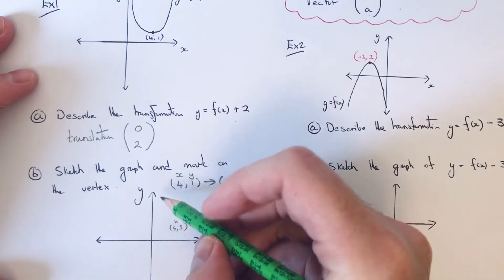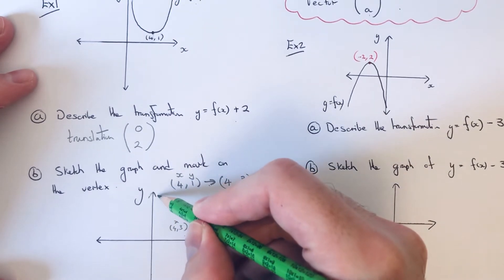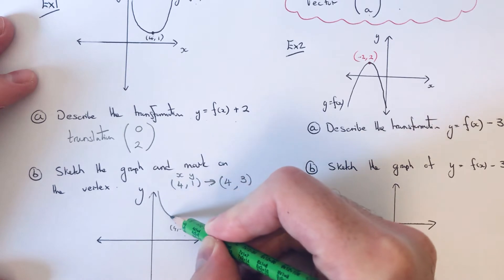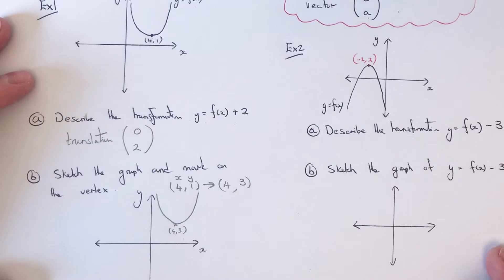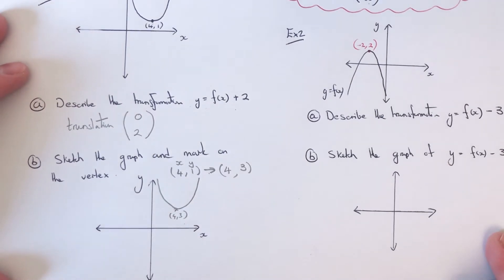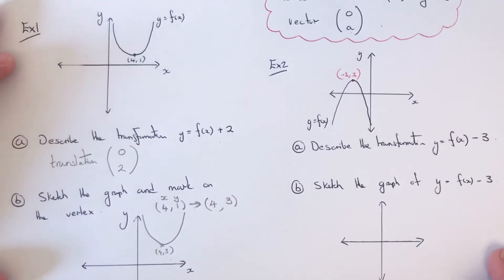And the shape of the first graph will stay the same because we're just translating it 2 units up. So we don't need to make it any steeper. And that's our final answer. So let's do one more example then.